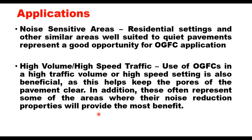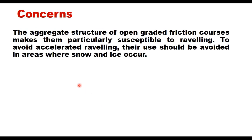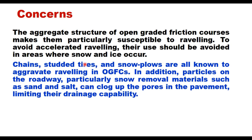However, there are a few concerns. The aggregate structure of OGFC makes it particularly susceptible to raveling, and therefore its use should be avoided in areas where snow and ice occur. Chains, studded tires, and snow plows are known to aggravate raveling in OGFC. Additionally, particles on the roadway — particularly snow removal materials such as sand and salt — can plug up the pores in the pavement, limiting their drainage capability.